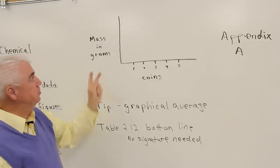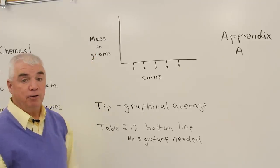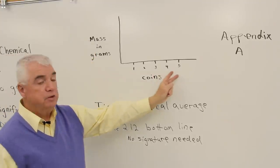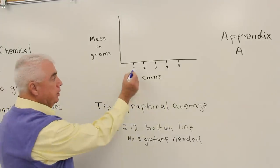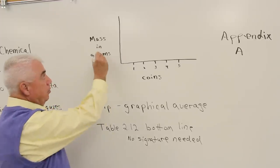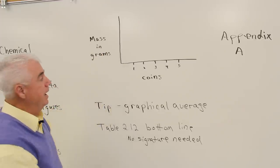Up here on the vertical axis, I've got the mass in grams of the coins. Down here is the number of coins. And as you weigh a coin, one coin for example, you'll come up with a certain mass for that.